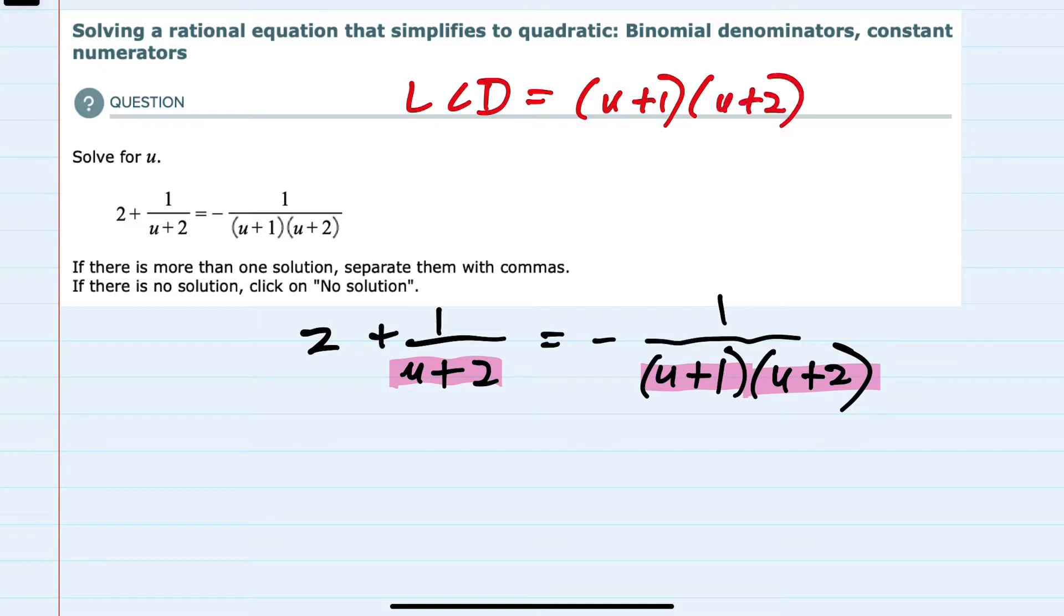That has both denominators as factors. So to get rid of these fractions, I'm going to multiply both the left-hand side and the right-hand side, every term, by that lowest common denominator. So this 2 will be multiplied by u plus 1, u plus 2. The second term here, 1 over u plus 2, will be multiplied by u plus 1, u plus 2. And on the right-hand side, this will also be multiplied by u plus 1, u plus 2.